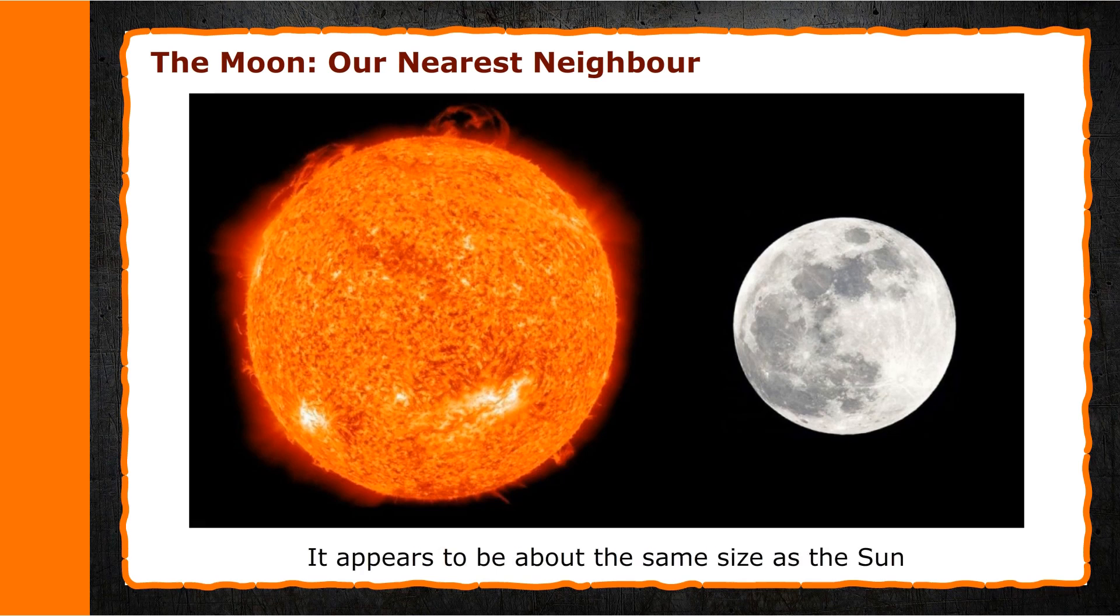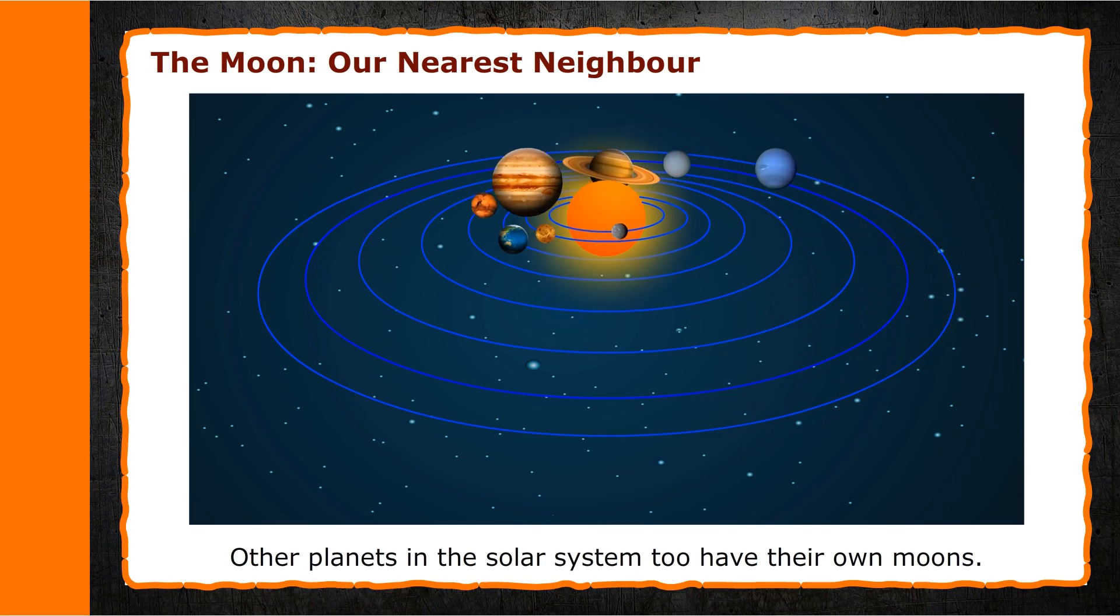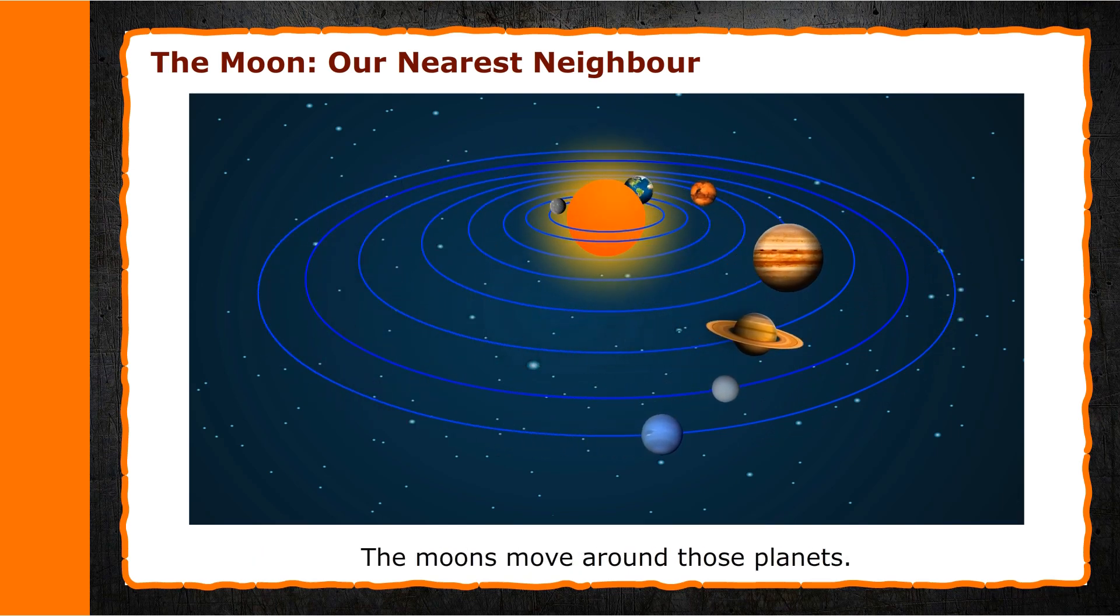It appears to be about the same size as the Sun because it is much closer to the Earth than the Sun. Other planets in the solar system also have their own moons. The moons move around those planets.